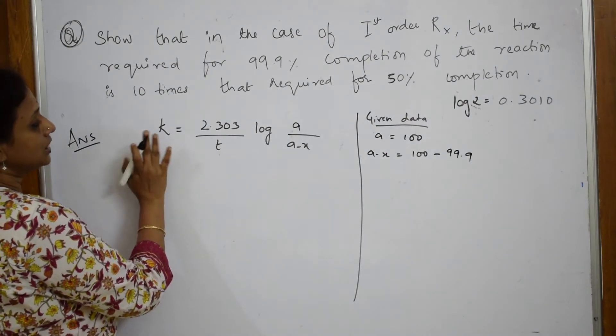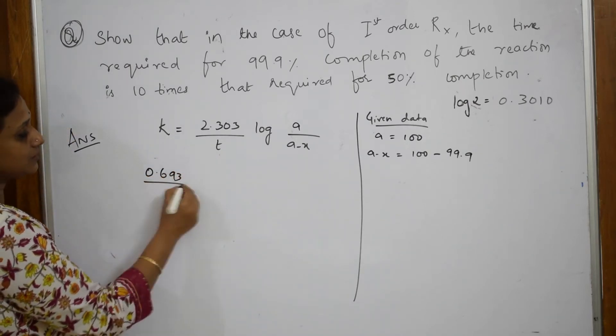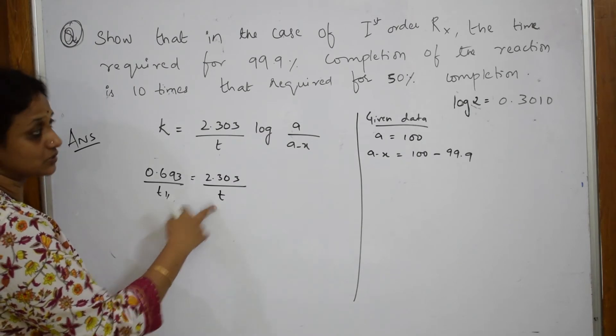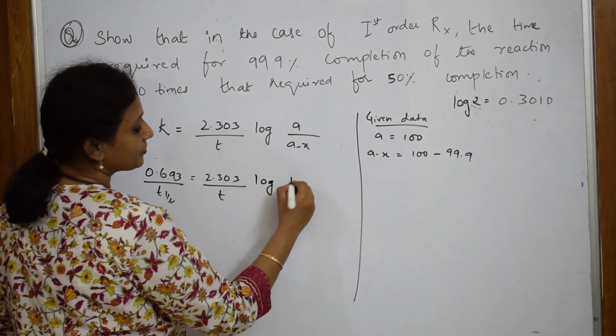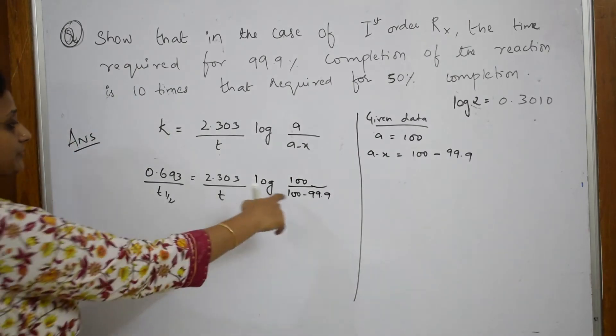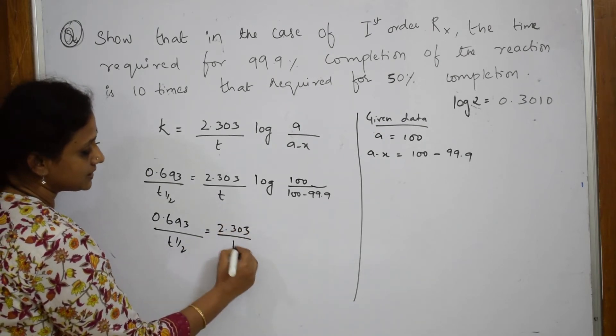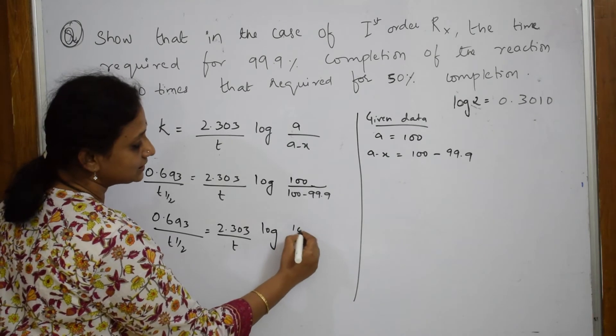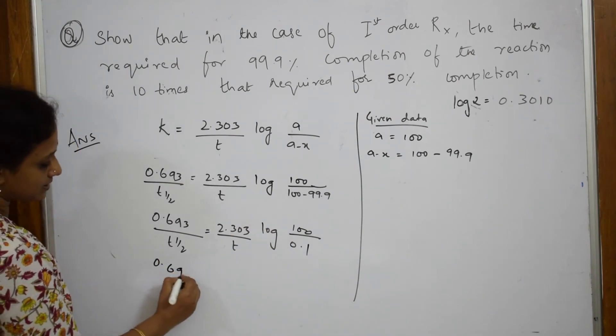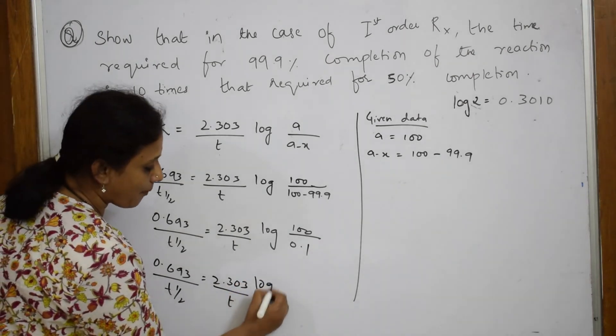Here I have to show t_half and this equation. That is what they want to show. We know k = 0.693/t_half. This equals 2.303/t. I have to equate these two. That is what they want us to show. And log(100/(100-99.9)).